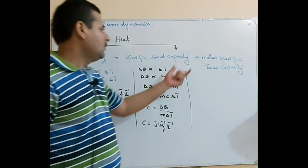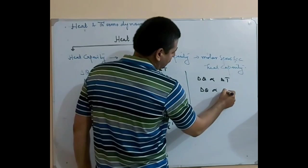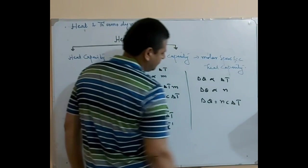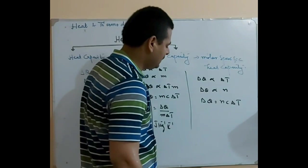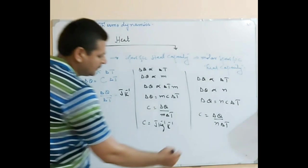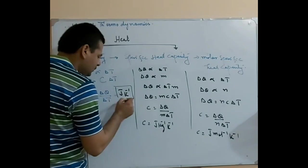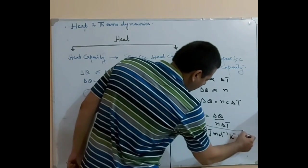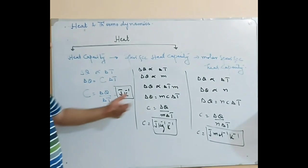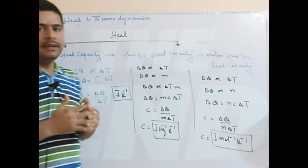Next is molar specific heat capacity. Delta Q is directly proportional to delta T and to n (number of moles). So delta Q equals n times C times delta T. Molar specific heat capacity C equals delta Q over n times delta T. The unit is joule per mole per kelvin. Units can be joule per kelvin, joule per kilogram per kelvin, or joule per mole per kelvin depending on context.